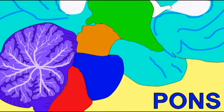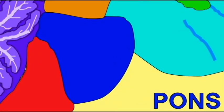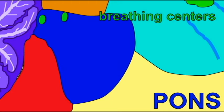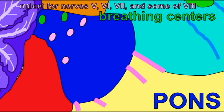In addition to this white matter, the pons also includes gray matter organized into several important nuclei which have roles in breathing reflexes and also the nuclei of several cranial nerves.